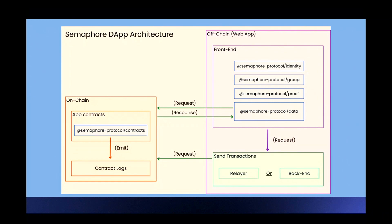This is the architecture of a Semaphore decentralized application. We have two parts: the on-chain part and the off-chain part. In the on-chain part, you will have your contracts and you import the Semaphore contracts. In the off-chain part, you will have your front end and you need something to send the transactions, because if the users send the transactions directly, they lose anonymity. So you need something like a relayer or a backend.